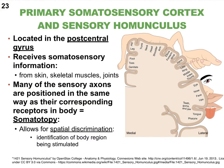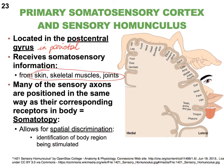The primary somatosensory area is located in the parietal lobe, right at the start of it — in the postcentral gyrus, which is the gyrus just posterior to the central sulcus. This is called the primary somatosensory cortex, and it receives information from skin, skeletal muscles, joints, bones, ligaments, and periosteum.